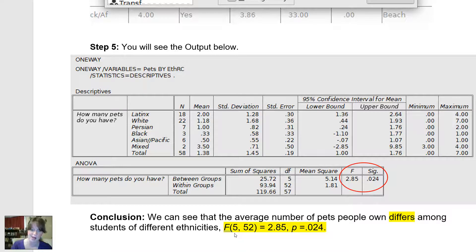And here is how I would report that using APA style. The F statistic for these data, for 5 and 52 degrees of freedom, is 2.85, with a p-value of 0.024. I can conclude that among these different ethnicities, at least one of these averages is different from another. The average number of pets is being influenced by your ethnicity. There are differences among the ethnicities in terms of the number of pets people own.